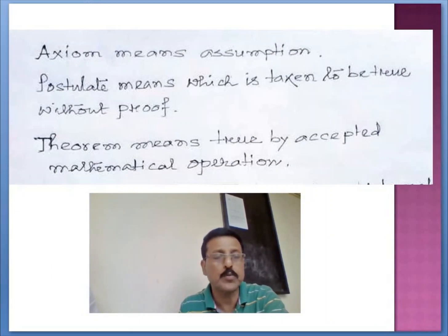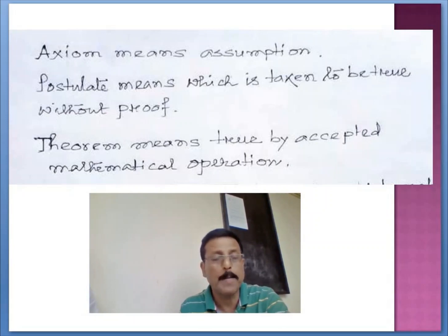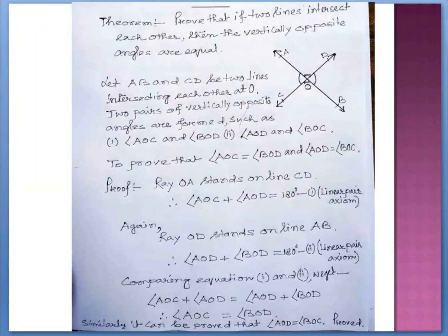What is an axiom, what is a postulate, and what is a theorem? Axiom means an assumption. Postulate means something which is taken to be true without proof. Theorem means something proved true by accepted mathematical operations. The theorem states: if two lines intersect each other, then the vertically opposite angles are equal.